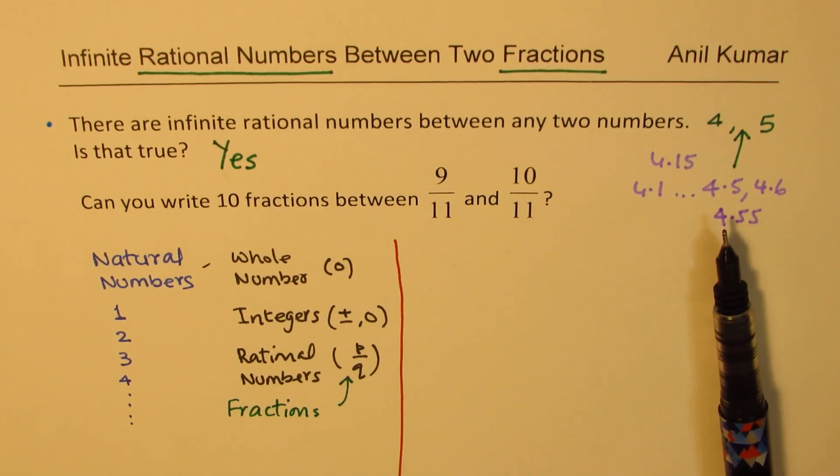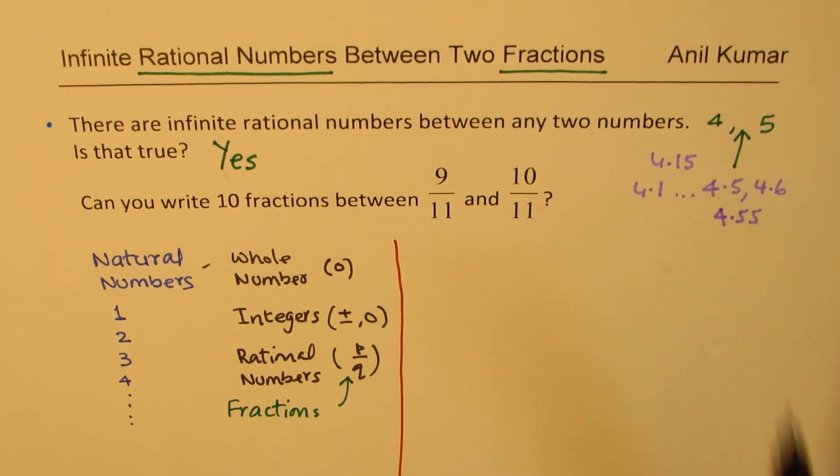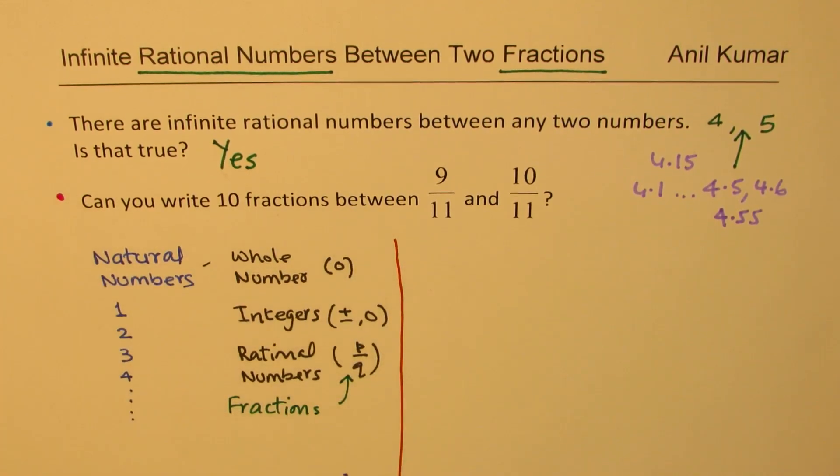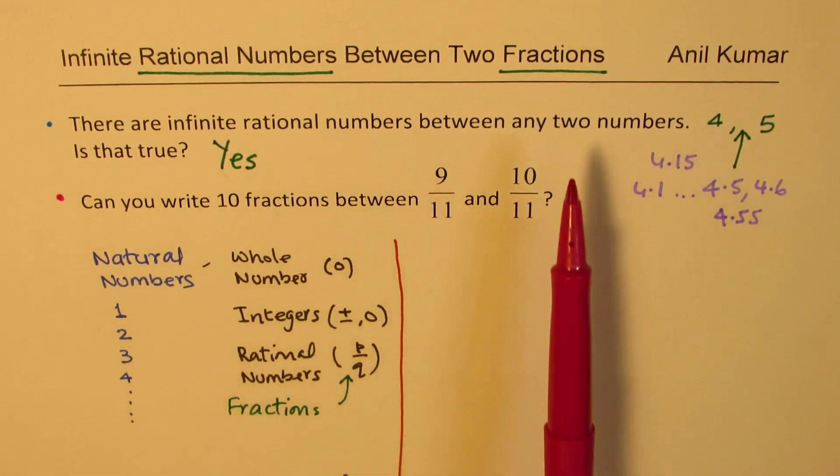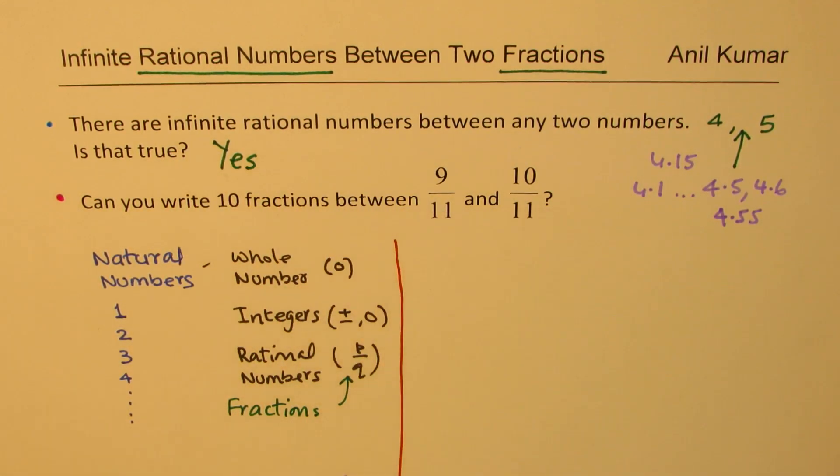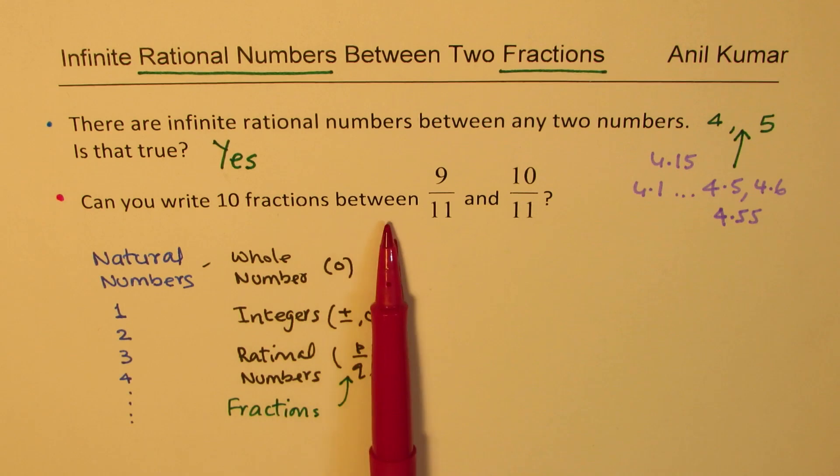Now, using decimals, it is kind of simple. You can just keep on adding numbers, very simple. How do you do the same exercise when we are talking about fractions? Now, that becomes very tricky. Now, we do realize that there are infinite rational numbers between any two numbers. Now, the question for you is, can you write 10 fractions between 9 over 11 and 10 over 11? Well, that is the question for you. We know there are so many infinite, just pick 10 of them. That is the question for you. How will you do it?